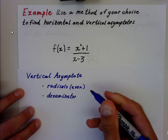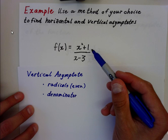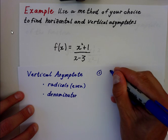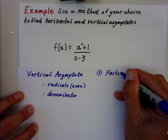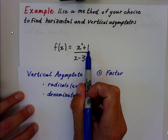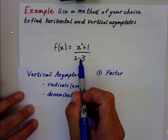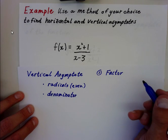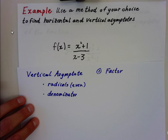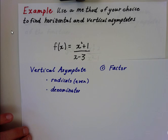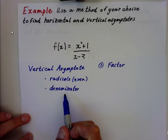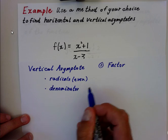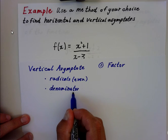When you're dealing with a vertical asymptote in a fraction, the first thing you might want to think about is can you factor. And I can't factor this. X squared plus 1 does not factor. X minus 3 is prime, it's in simplest form. So I can't factor. When I look at the vertical asymptote, I have to look at radicals and denominator. There's no radical, so now I'm looking at this denominator.